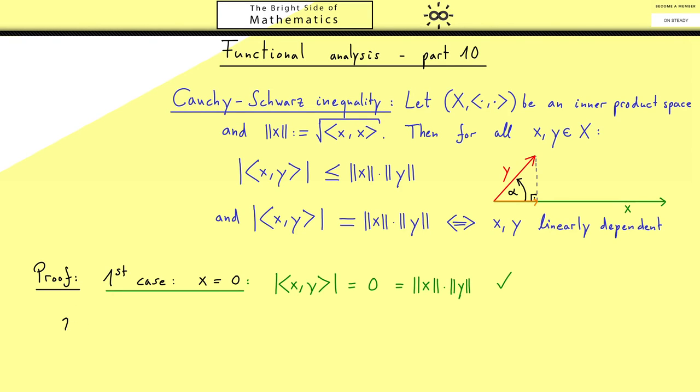Now you might already guess, the actual interesting case would be the second one. Here x is not a zero vector, which means we can divide by the norm of x. And that's what we do immediately. I want to define x hat as the normalized vector x. This means that x hat has length 1, so it just gives the direction of the vector x.